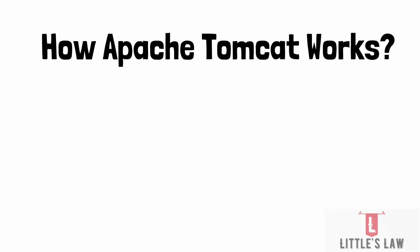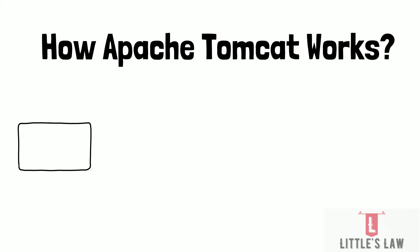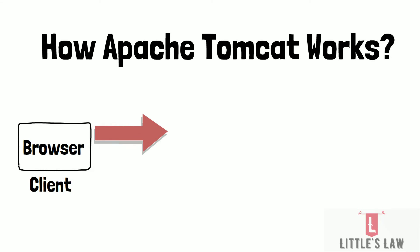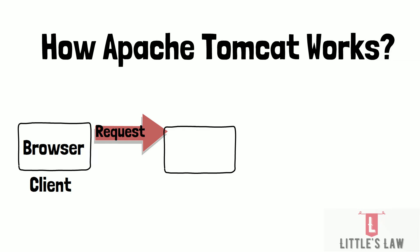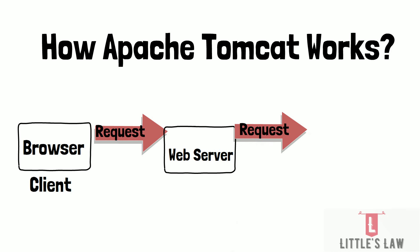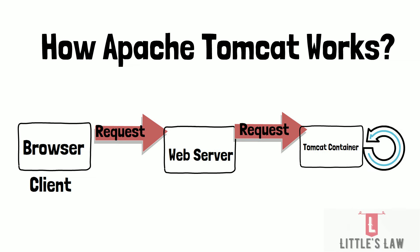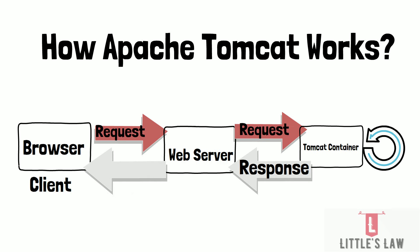When a client sends an HTTP request to a web server running Apache Tomcat, the web server forwards the request to the Tomcat container, which processes it and generates a response that is sent back to the client. Here is a high-level overview of the six steps: Step 1 — the client/browser sends an HTTP request to the web server running Apache Tomcat. Step 2 — the web server receives and forwards the request to the Tomcat container. Step 3 — the Tomcat container determines which Java servlet or JSP should handle the request. Step 4 — the selected servlet or JSP generates an HTTP response. Step 5 — the Tomcat container sends the response back to the web server. Step 6 — the web server sends the response back to the client.